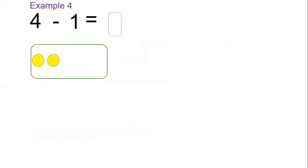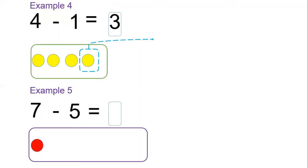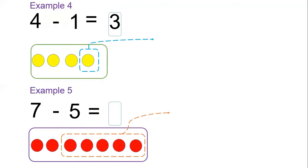Try that: four dots, take away one, you remain with three. Seven minus five — how many dots should we have? One, two, three, four, five, six, seven — take away five — you remain with two. I hope that you have understood how we can subtract by taking away.